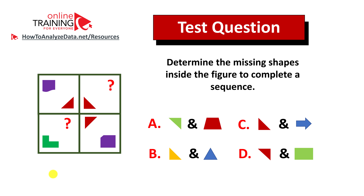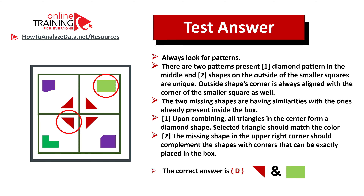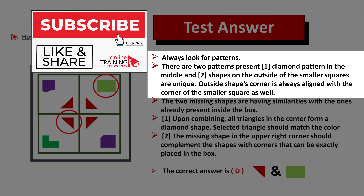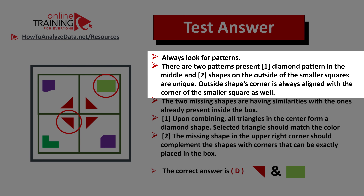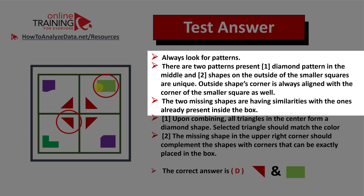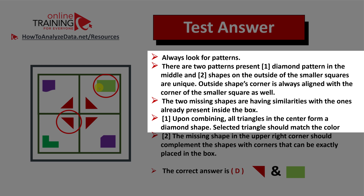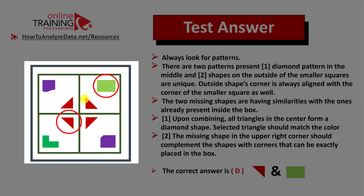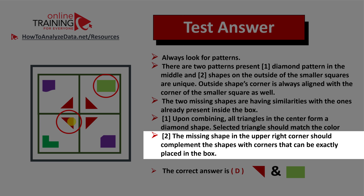Did you figure out the solution? Let's continue to see how we can solve this challenge together. As usual, you need to look for patterns, and there are two patterns here. Number one is the diamond pattern in the middle, and number two is the pattern of shapes on the outside of the smaller squares — which are unique outside shapes whose corners always align with the corner of the smaller square. The two missing shapes also have similarities with other shapes present in the box. Upon combining, all triangles in the center form a diamond shape.